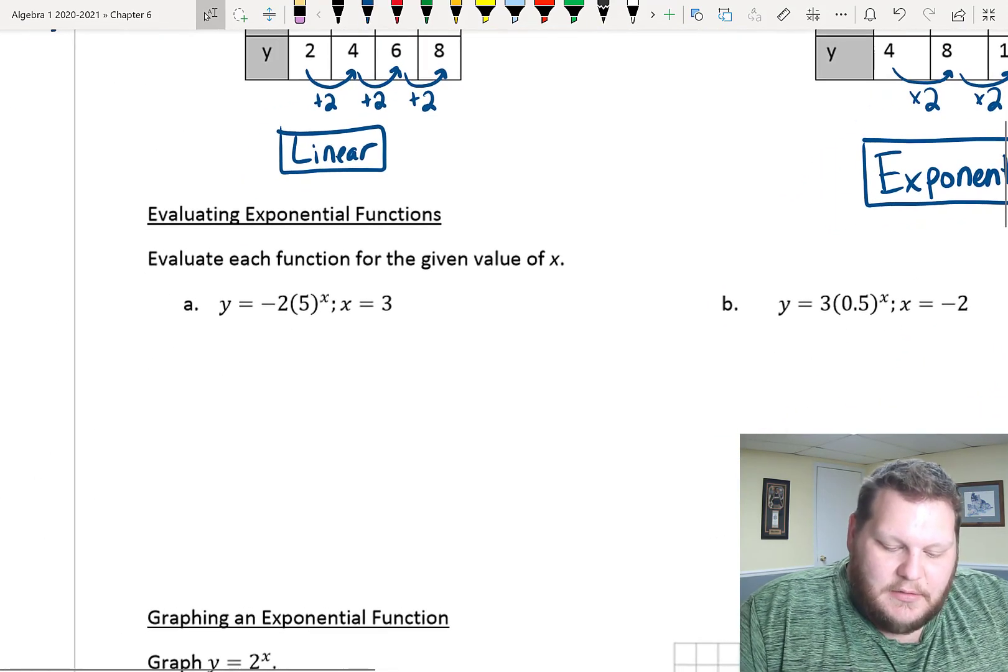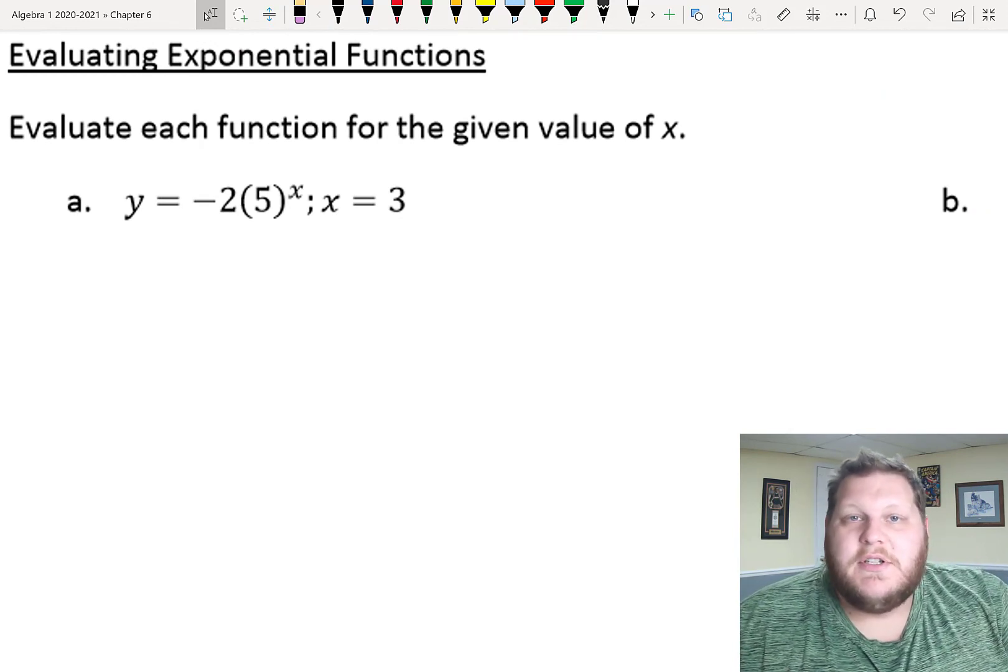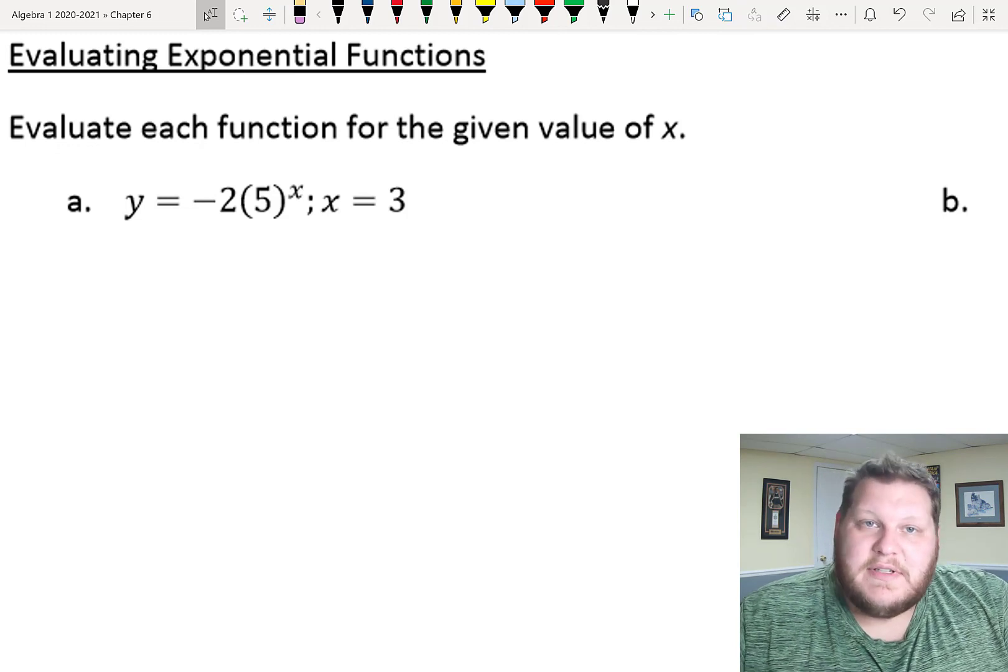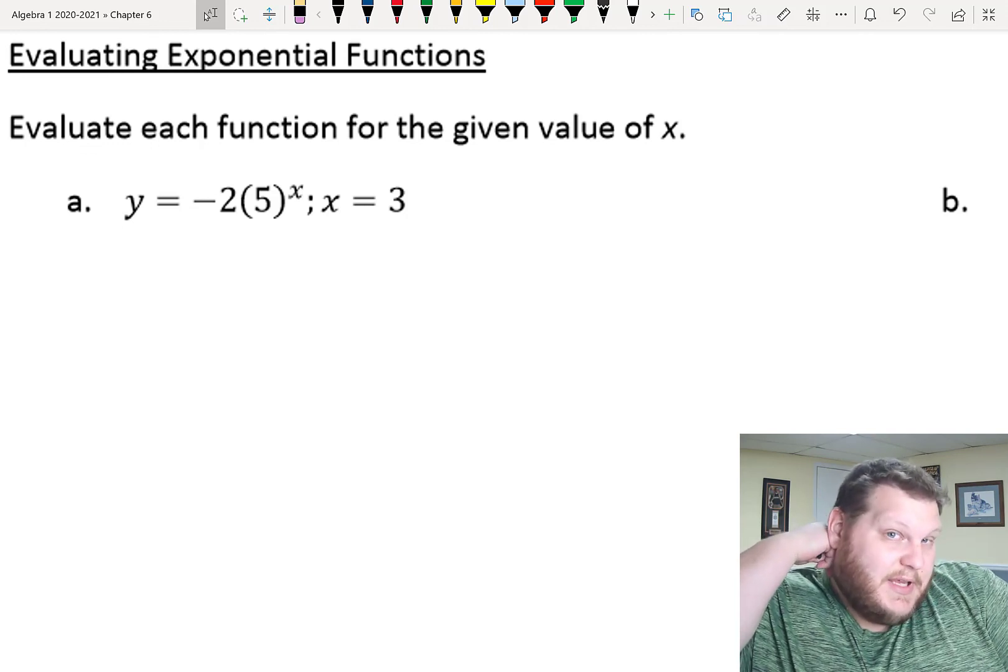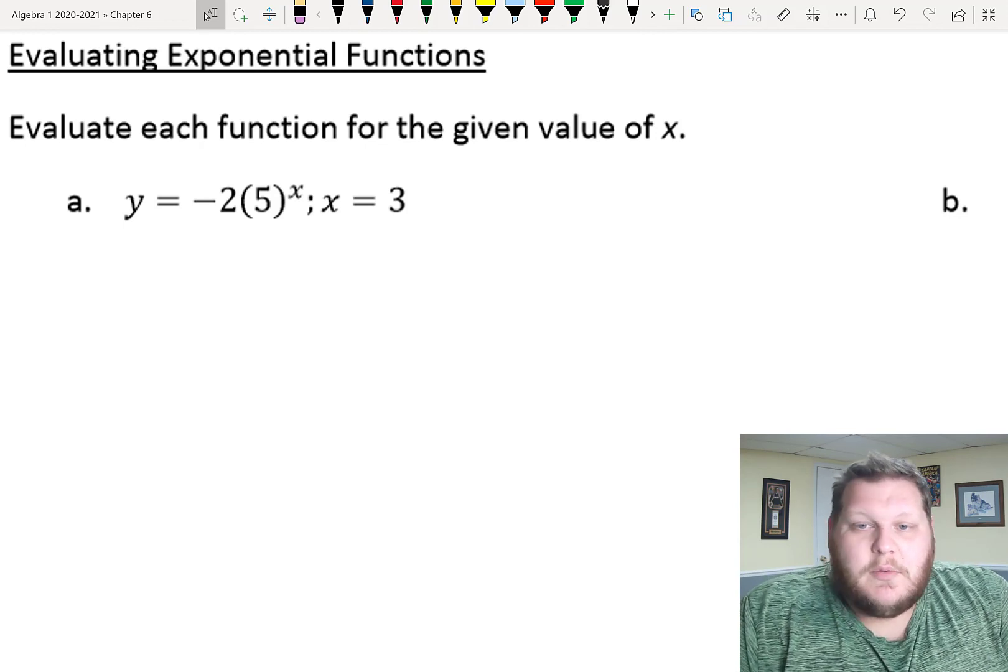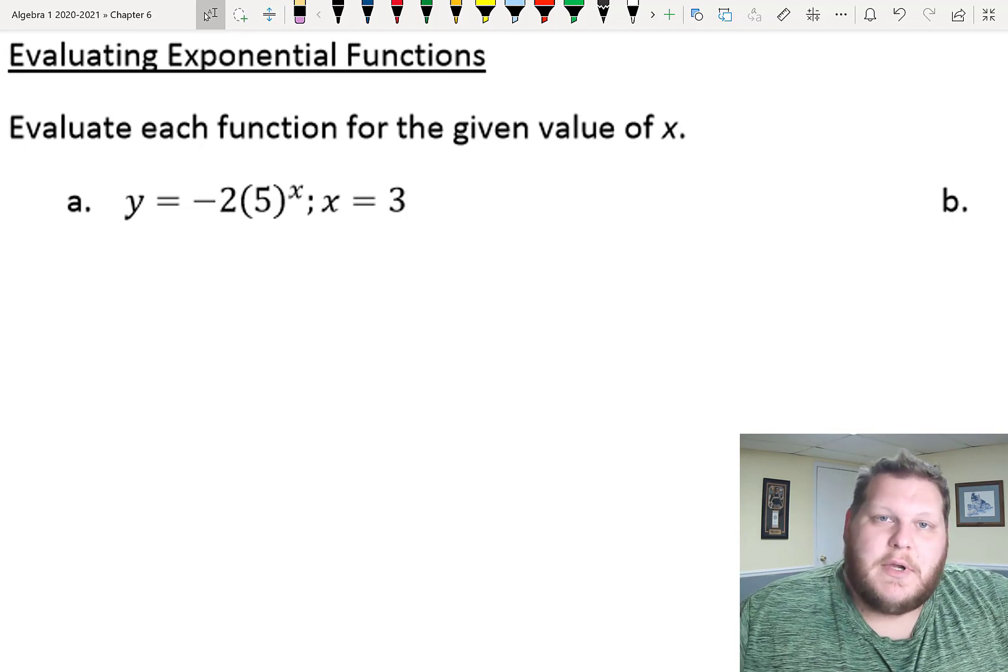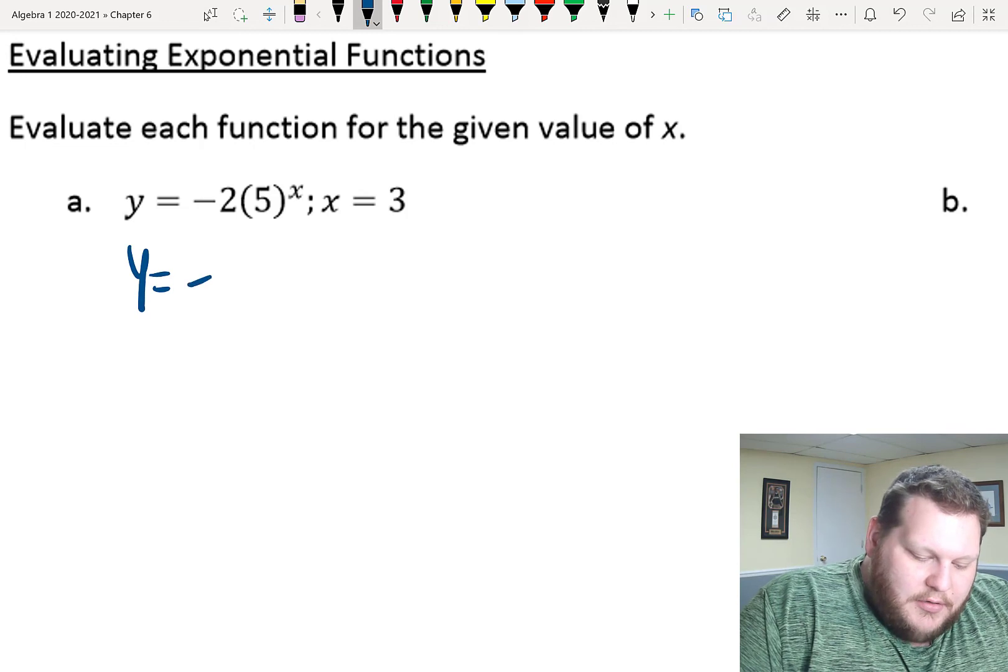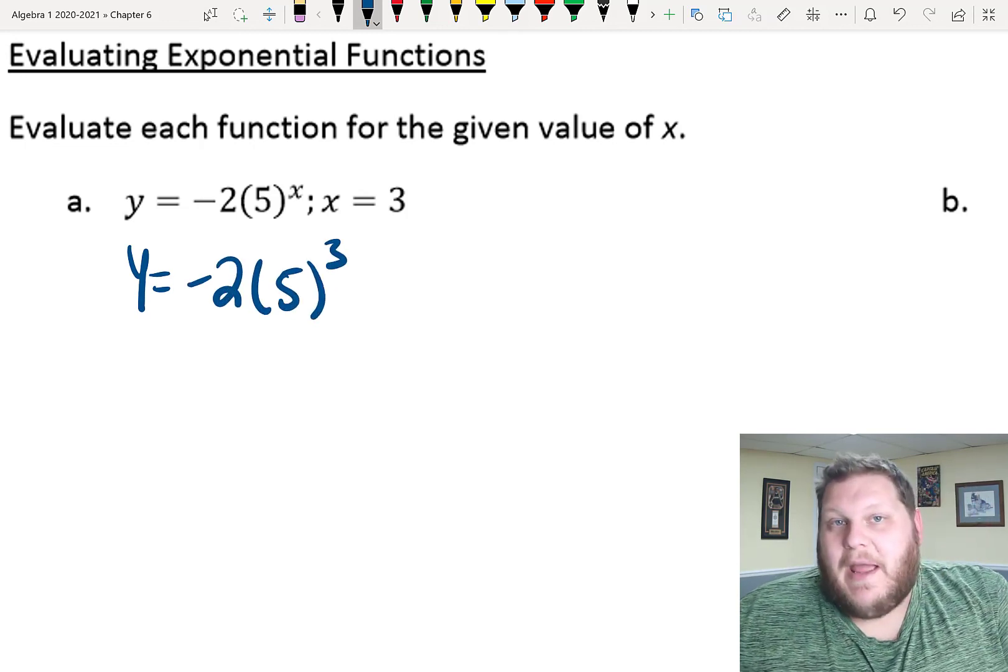Our second skill, our next big one, is evaluating exponentials. Now, this is basically just order of operations. We've done skills similar to this, both with our systems, with our linear equations, and even before we even had specific equations we were looking at, back with function notation. Here, this is just giving us our equation, y equals negative two times five to the x power, but we're evaluating it when x equals three. So, we're just doing some substitution here. We're just going to be plugging in our three in for x, and seeing what we get back out.